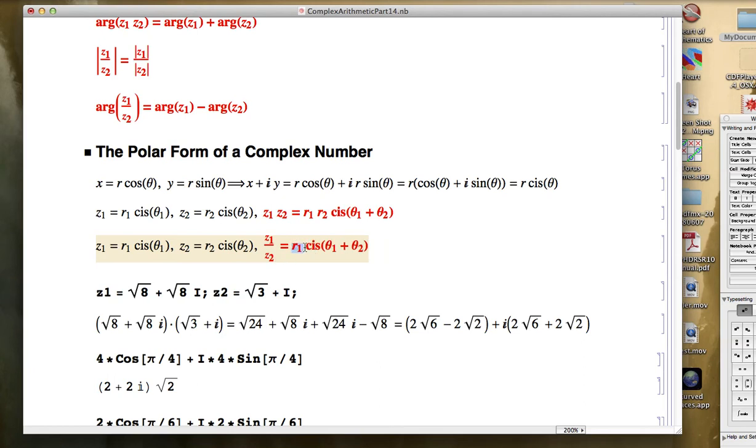you need to divide the moduli and you need to subtract the arguments. So as long as z2 is not 0, which will imply r2 is not 0, then we can do this division in polar coordinates this way.